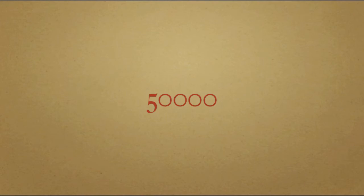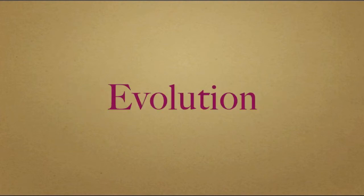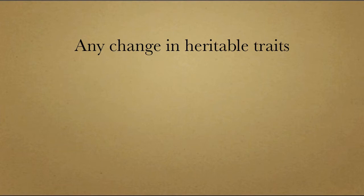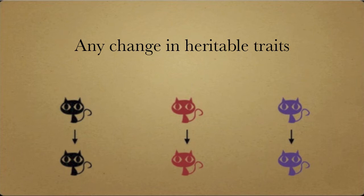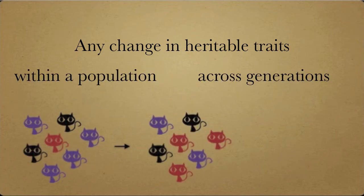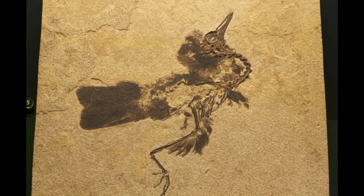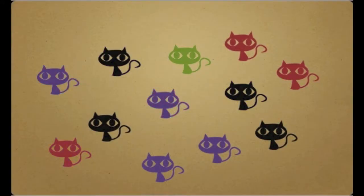Fifty thousand years does seem like a lot, but now let's look at processes that have been operating for millions of years. We at CES anchor all our work in the fact that evolution has shaped the world around us. By evolution, we mean any change in characteristics or traits that are heritable — passed from parents to offspring. This process occurs within a population across many generations. We can study evolution in many ways, from reconstructing histories through the fossil record to understanding processes at the population level.